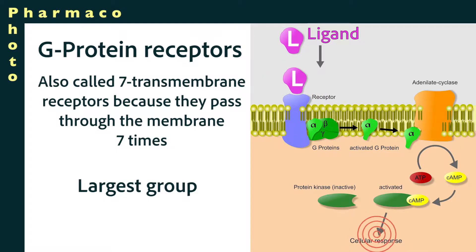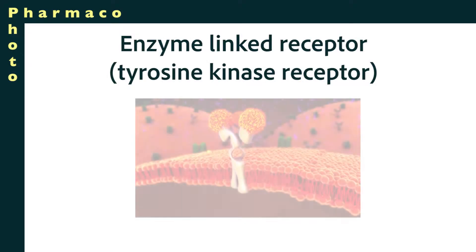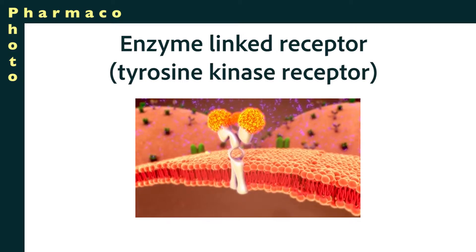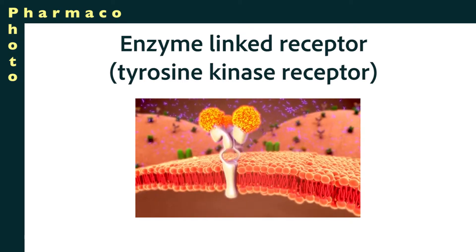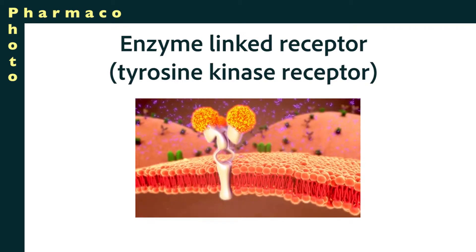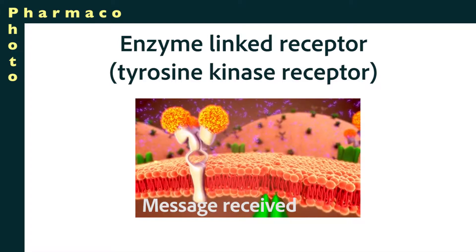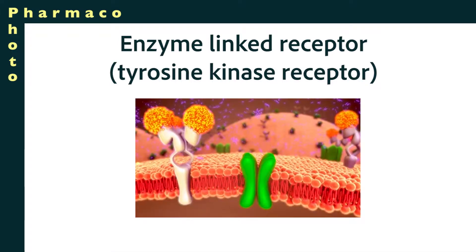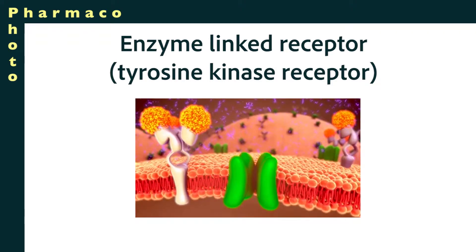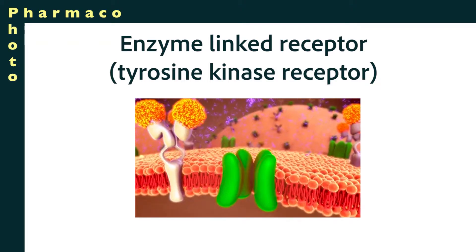Another membrane-bound receptor is the enzyme-linked receptor, also called tyrosine kinase receptors. The insulin receptor is an example of that type. Binding of the ligand or a drug mimicking the ligand, simplistically speaking, turns an inactive molecule in the cell into a molecule that starts signaling the cell to undergo a series of actions.